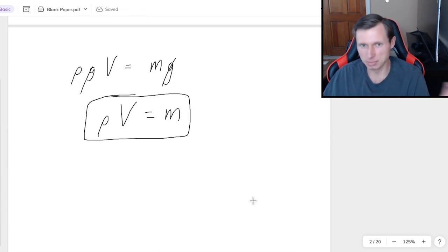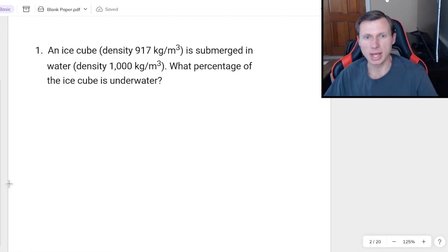Now let's do some practice problems to make sure you really understand it. So here's the first one. We have an ice cube density 917 kilograms per meter cubed submerged in water density of 1000 kilograms per meter cubed. What percentage of the ice cube is underwater?